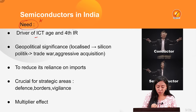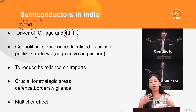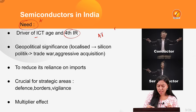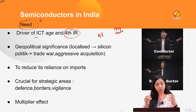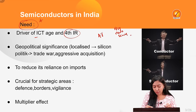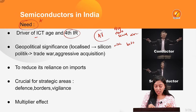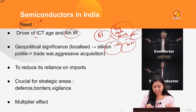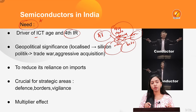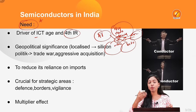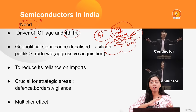First, semiconductors are the driver of the ICT age or the Fourth Industrial Revolution. Modern information and communication technology is driven by artificial intelligence, big data servers, drones, bots, missiles, and more — and at the heart of all of them is the semiconductor. So if you want to drive the Fourth Industrial Revolution in your country, you need the brain and heart of the technological future: the semiconductor.